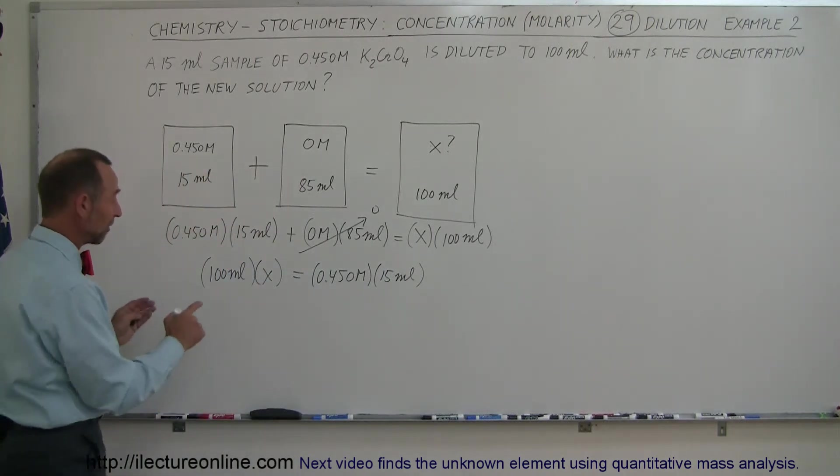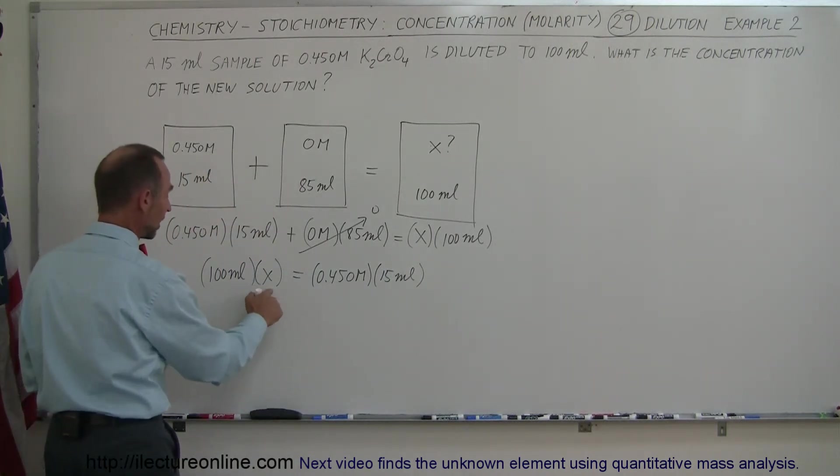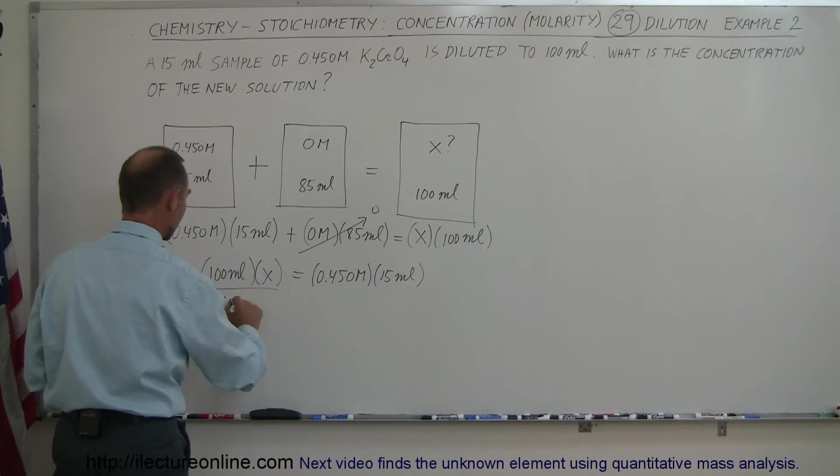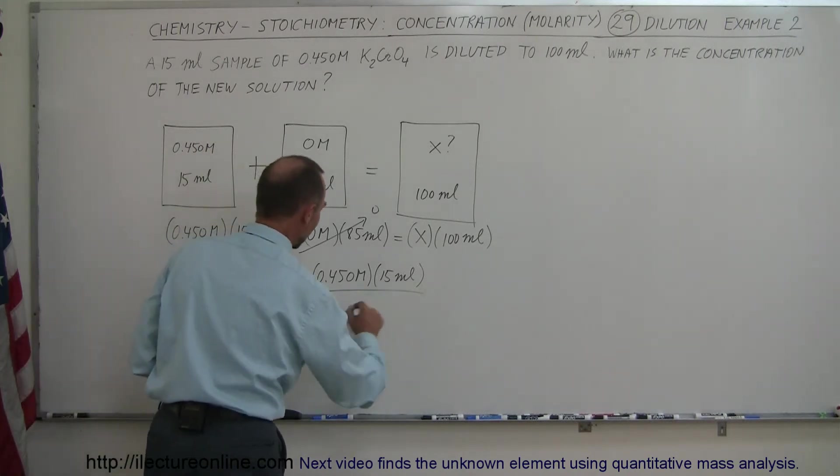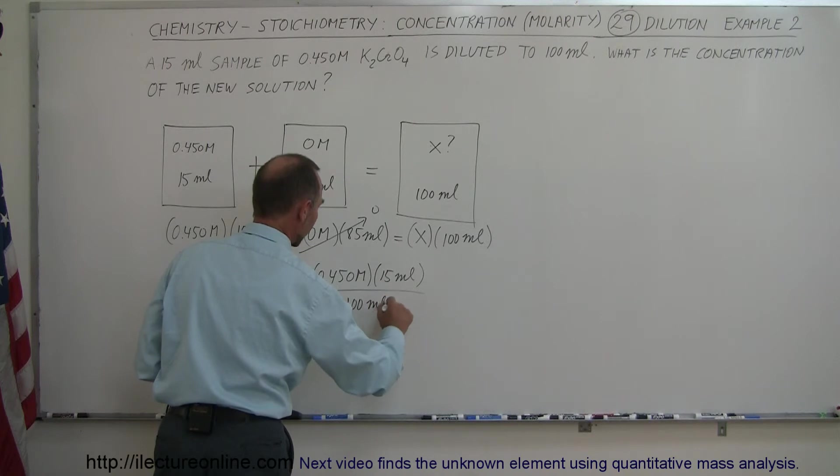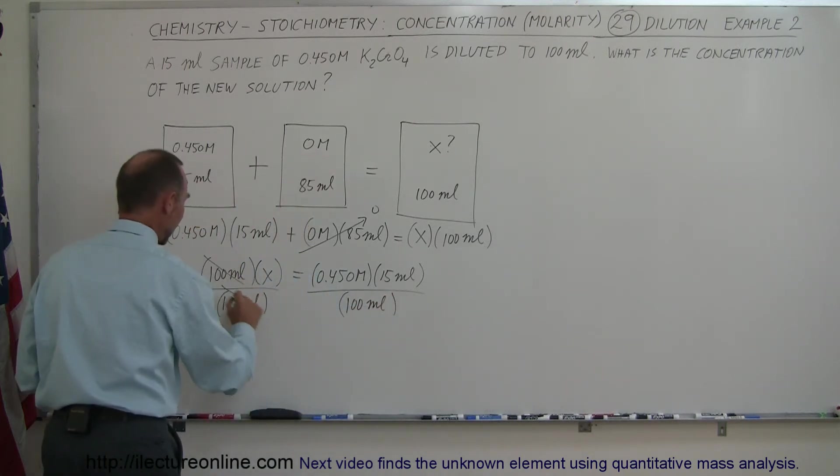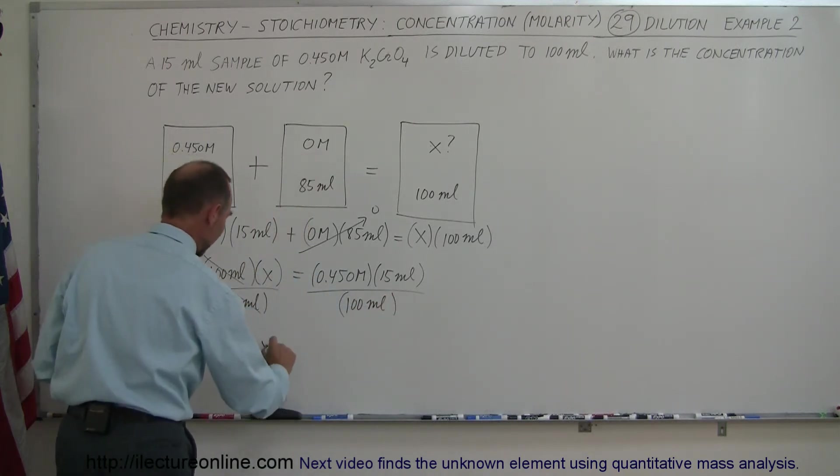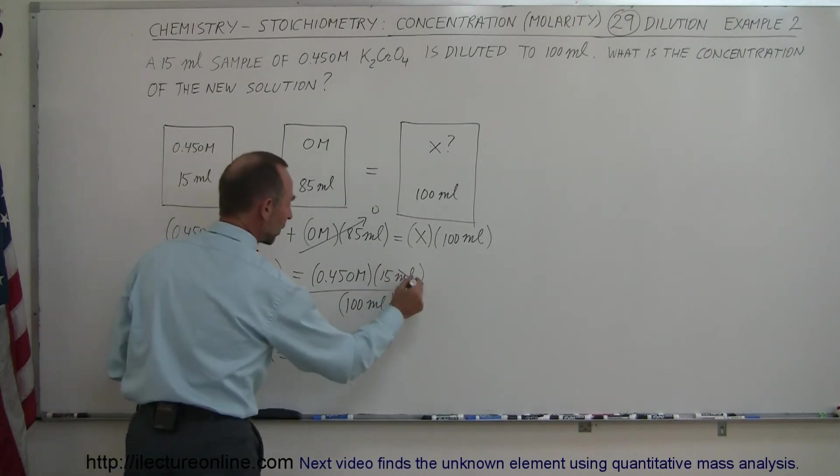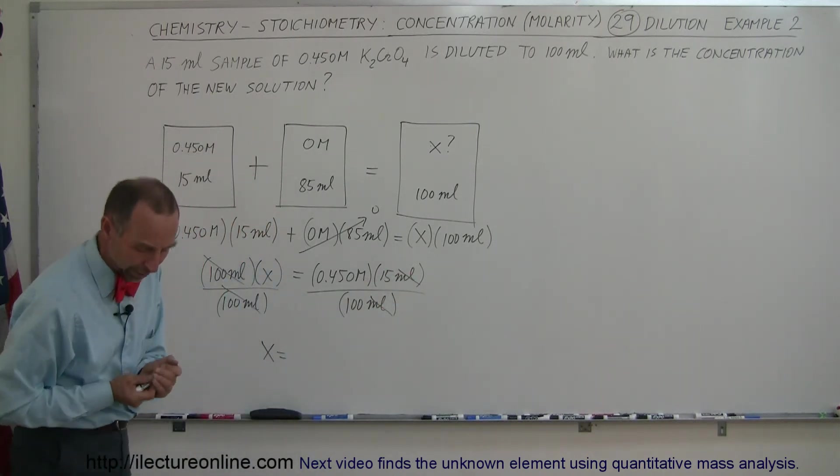Now the next step is I'm going to divide both sides by the coefficient in front of the x. I'm dividing the left side by 100 milliliters. And I divide the right side by 100 milliliters. This cancels out, and I'm left with x on the left side. So x is equal to, notice that milliliters cancels out, and we're left with the molarity.